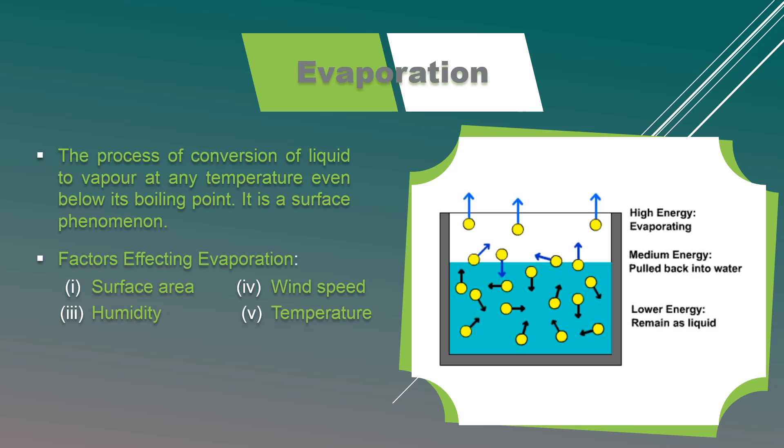More is the exposed surface area of any substance, more liquid droplets will change to vapor state. For example, drying of wet clothes. Clothes dry faster when they are spread on a line. The reason is that when we spread them, the surface area gets increased, therefore evaporation increases as more molecules are exposed.